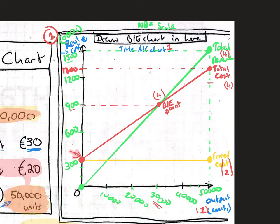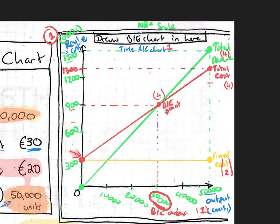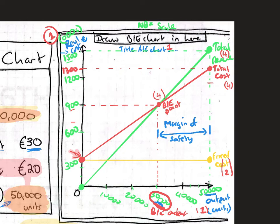What I'd also do at the break-even point is dot across to show the break-even revenue and costs. If they make 30,000 units they will earn €900,000 and it will also cost them €900,000. Mark the break-even output of 30,000 units on the horizontal axis to show the examiner you know that's the number of units needed to break even. The margin of safety is the difference between target output and break-even output — from 50,000 down to 30,000 is 20,000 units.